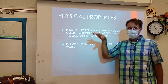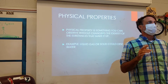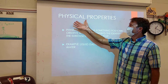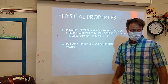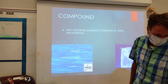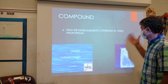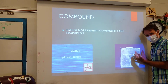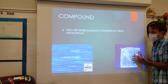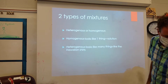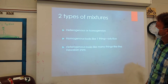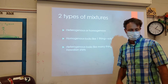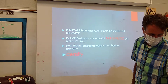Physical properties can be used to separate mixtures. We don't use physical properties to separate chemical compounds. For example, we can't separate the sodium and the chlorine in a cube of salt using a physical property. But we can separate mixtures using physical properties — like salt water and other types of mixtures.